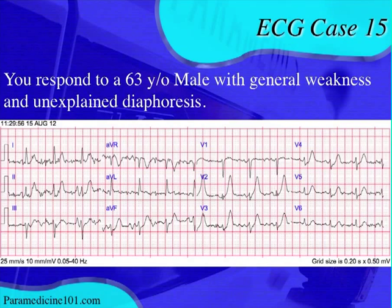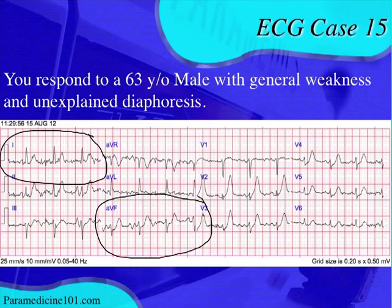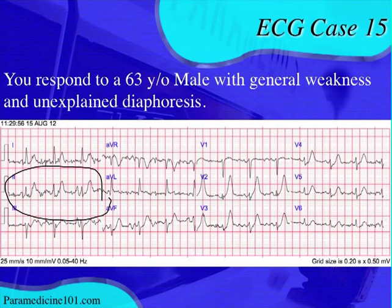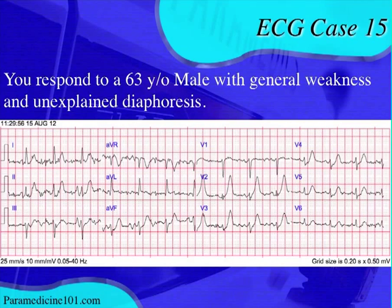Next, we look at the axis using the quick quadrant method. Lead I is positive and aVF is negative, so we have some sort of left axis deviation. A quick trick: if lead II is positive with left axis deviation, as it is here with an upright QRS complex, that is physiological left axis deviation — possibly just a minor abnormality. If lead II were negative, that would be pathological, indicating a left anterior fascicular block or other pathology.